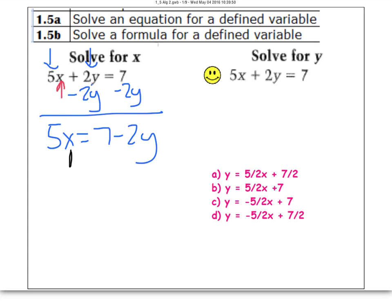Now x is almost by itself. It's currently being multiplied by 5. To get rid of that you're going to divide by 5. You're going to divide every term by 5. So your answer is going to be x equals 7 over 5 minus 2y over 5.